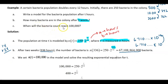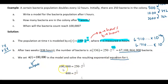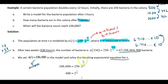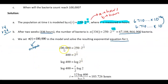Part C: when will the bacteria count reach 100,000? They're giving you an output value and you need to solve for the input — the value of t that gives this output. Take the function established earlier, set it equal to 100,000, and solve. This involves logarithms — any time the variable is in the exponent position, you need a logarithm to solve. Divide both sides by 250 to get 400.